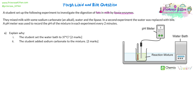A student set up the following experiment to investigate the digestion of fats in milk by lipase enzymes. Immediately when thinking about a practical involving enzymes, temperature and pH are going to be involved because they affect the rate of reaction. They mixed milk with sodium carbonate, which is an alkali, water, and the lipase. In a second experiment, the water was replaced with bile. A pH meter was used to record the pH of the mixture in each experiment every two minutes.